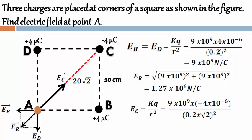Also, E_C will be equals to KQ by R square then we substitute the values for E_C as well that will be equals to minus 0.45×10^6 Newton per coulomb.